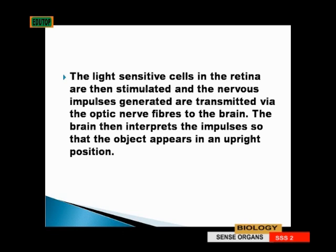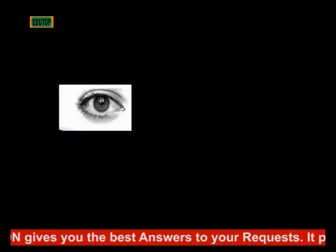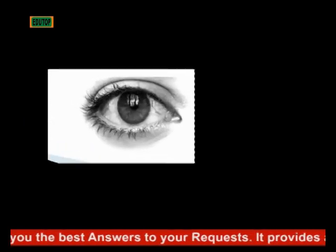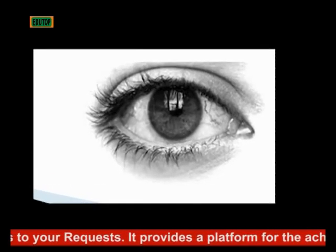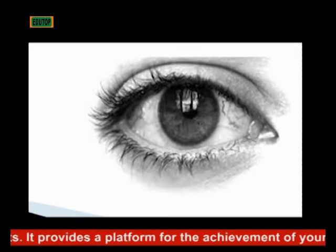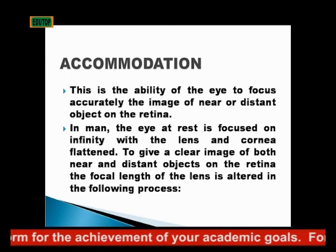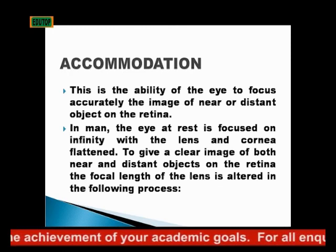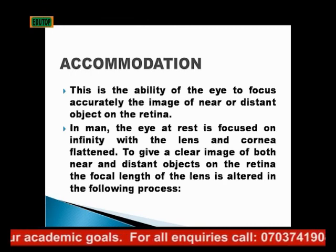The brain then interprets the impulses so that the object appears in an upright position. Now, a critical aspect of the eye is what's called accommodation. Accommodation is the ability of the eye to focus accurately the image of near or distant objects on the retina.